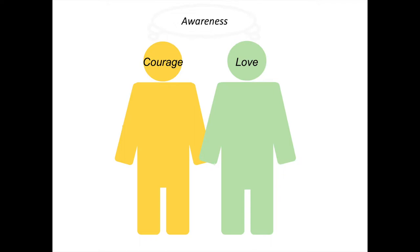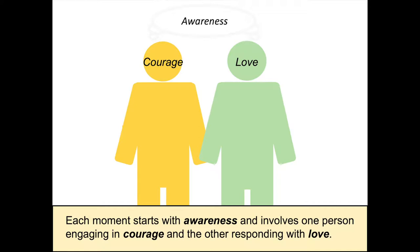Overall, there are these guiding principles of the model: awareness, courage, and love. To the extent we can engage in our interactions with awareness, with courage, and with love, the interaction is going to go better. Each moment of an interaction starts with awareness and involves one person engaging in courage and the other responding with love — somebody does something courageous and then the other person responds lovingly. In real interactions it can be really messy; we've tried to simplify it as a linear sequence, but we recognize that real interactions are messy. It's like learning to dance — at first you work on step by step, but then the dance is where you put it all together in a natural and fluid and beautiful way.